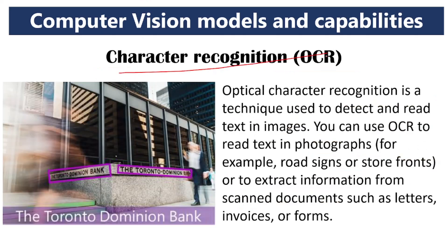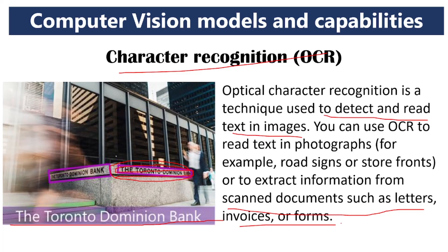Next is character recognition. Character recognition is used to detect and read texts in images. If any text is present in a particular image, this AI — character recognition — recognizes and displays the text. For example, the text 'Toronto Dominion Bank' on a slab in a picture has been recognized and displayed. This is useful while scanning documents such as letters, invoices, or forms.